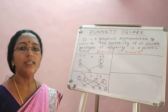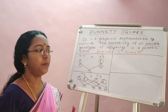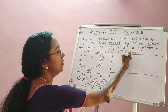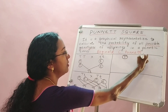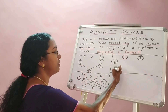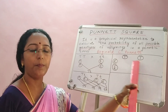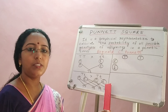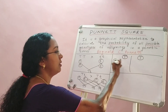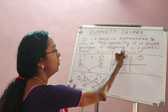Let us see how that representation is done. The representation begins with the gametes. You represent the gametes of one parent on the top row and the gametes of the other parent on the left column. You then separate the gametes using lines.